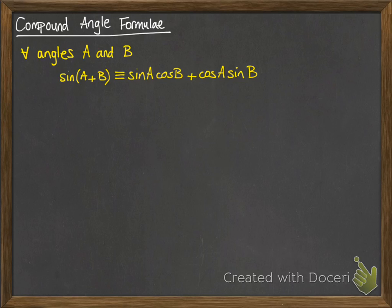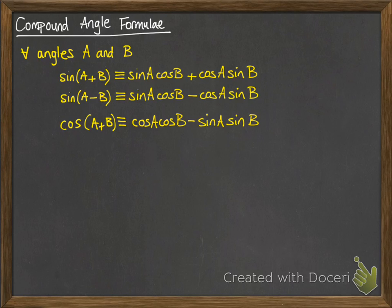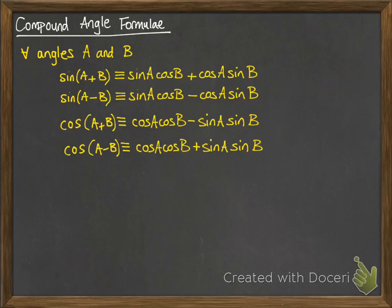So sine of A plus B is identically equal to sine A cos B plus cos A sine B. You'll see some patterns emerging here, and if we do sine A minus B, we get sine A cos B minus cos A sine B. You can see how they match up. We can also do similar things with cos. So cos of A plus B is cos A cos B minus sine A sine B. And cos of A minus B is cos A cos B plus sine A sine B. Notice with cos that the symbol is the opposite each time.